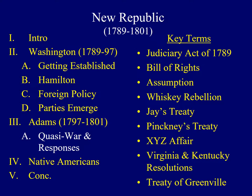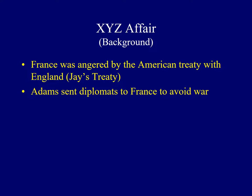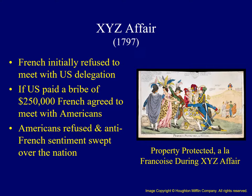Unfortunately for Adams, following the father of the nation was difficult, and his administration was characterized by difficult times. The French were angered by Jay's Treaty and in retaliation seized several American ships, threatening American trading rights as neutrals. To avoid war, Adams sent diplomats to Paris. The French Foreign Minister refused to meet with them, and the delegation was approached by three individuals referred to as X, Y, and Z, who demanded a payment of $250,000 before any meeting could occur. The Americans refused to pay what was essentially a bribe. This incident became known as the XYZ Affair, as a wave of patriotism and anti-French sentiment spread across the country.